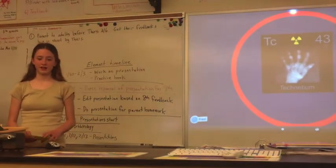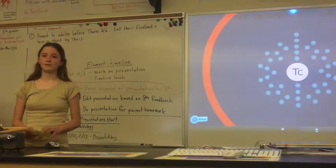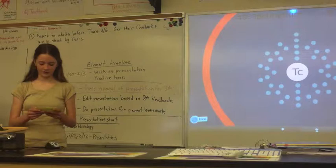Technetium, abbreviation TC, is found in the transition metal family. It has an atomic number of 43, meaning it has 43 protons and 43 electrons.